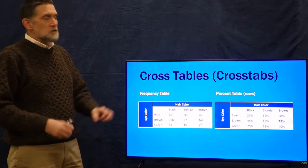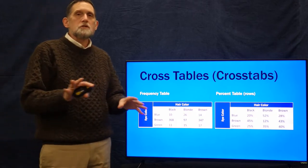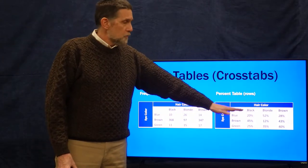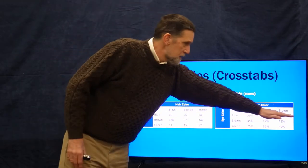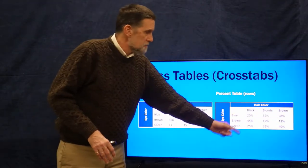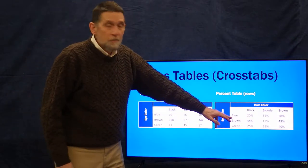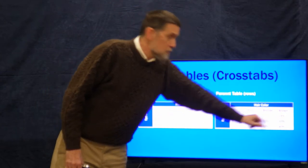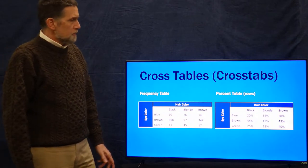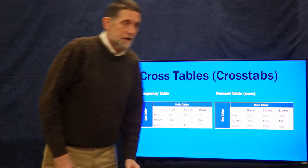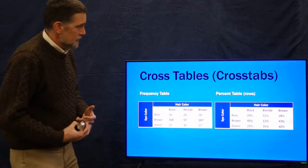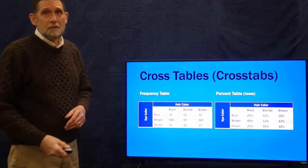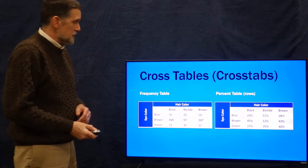A different way to look at this is in terms of percentages. Here we have a percentage table based on rows — we row-percentage, that is, the percent of all the people in the rows. So for people with blue eyes: 20% have black hair, 52% have blonde hair, and 28% have brown hair. For green eyes, 40% have brown hair — that's like me. For those who are anthropologists, you might be interested to know: if you have green or blue eyes, or blonde or red hair, those are Neanderthal genes.